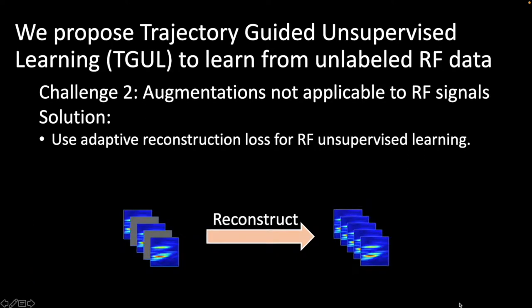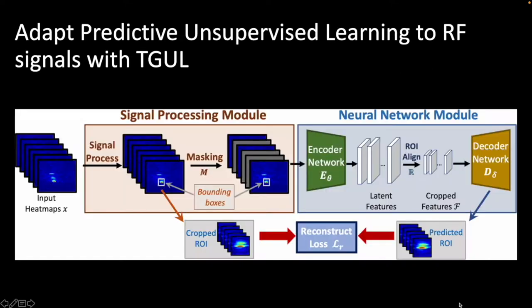For the augmentation challenge, since predictive unsupervised learning is more suitable than contrastive unsupervised learning, we use adaptive reconstruction losses for unsupervised learning with RF datasets. We first adapt predictive learning to RF signals with TGUL. In the signal processing module, we use motion detection to obtain bounding boxes for each person. After this, RF frames are randomly masked.